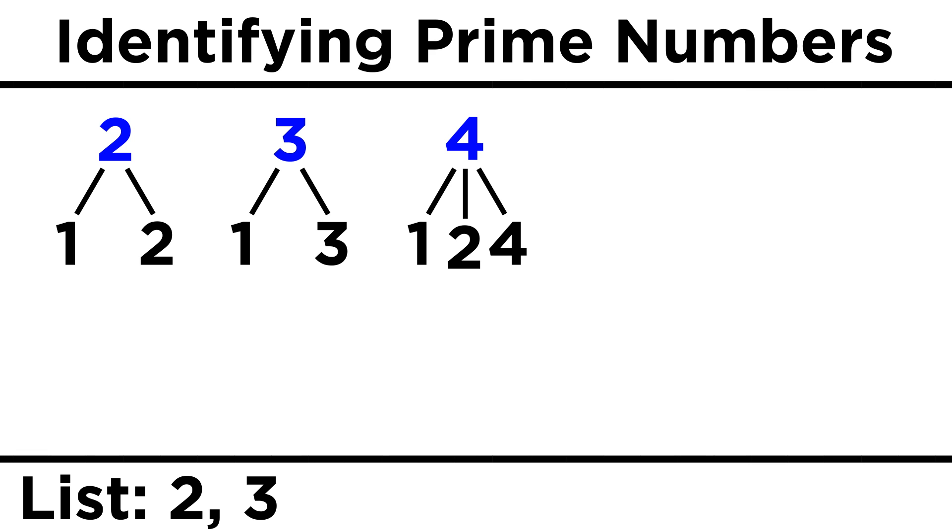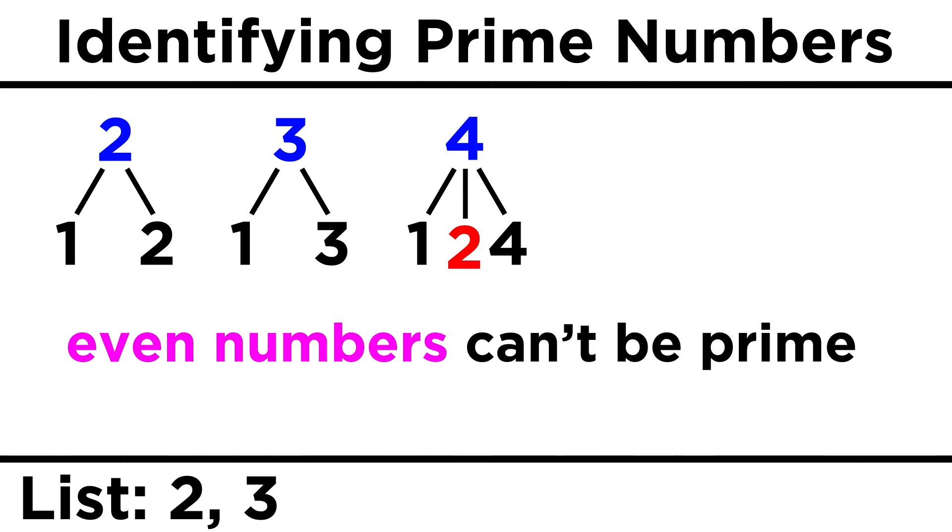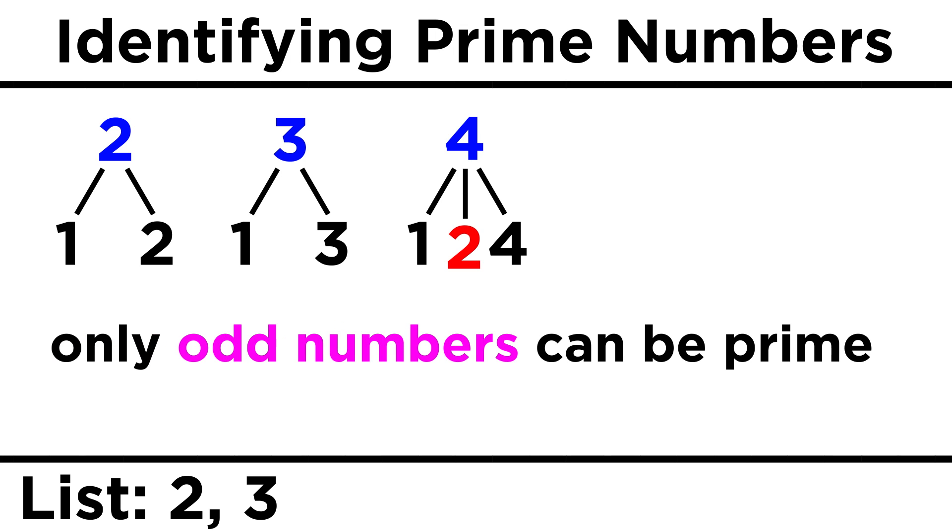But once we get to four, four is divisible by two, so four is not a prime number. In fact, no even numbers, except for two, can be prime numbers, because they are all divisible by two. Only odd numbers can be prime numbers.